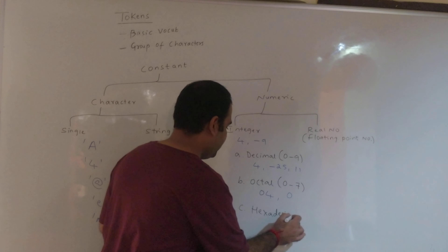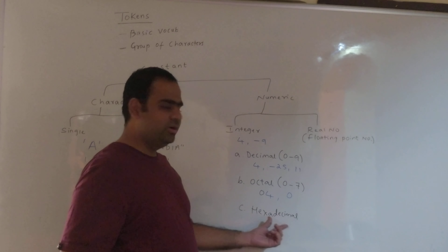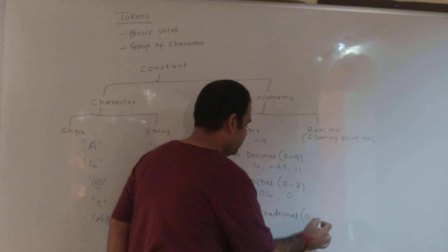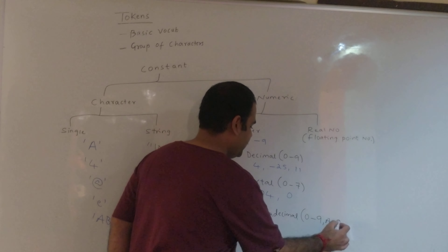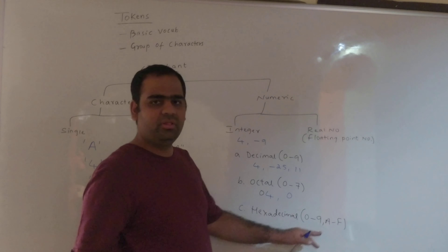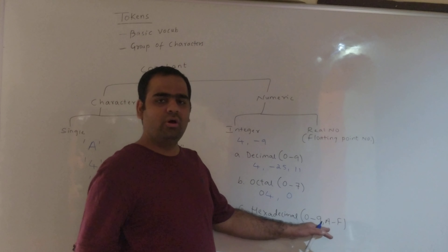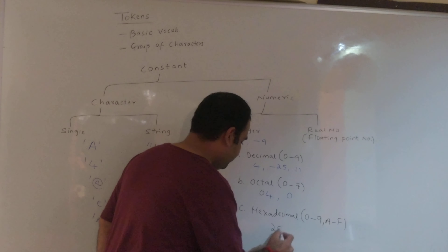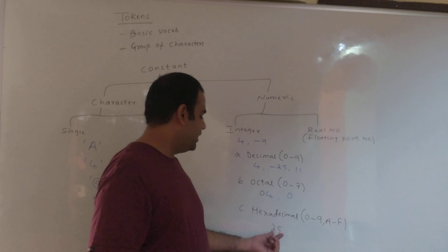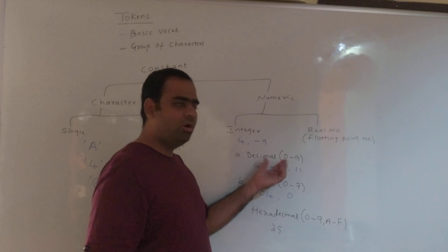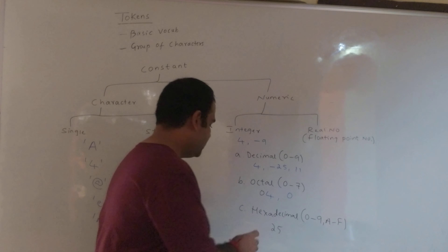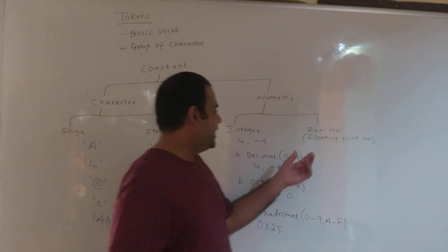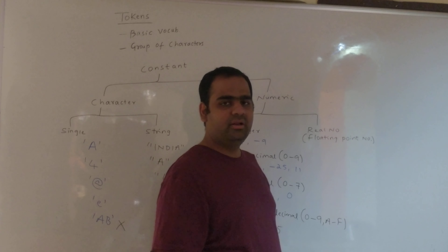The third type of integer is hexadecimal. Hexa means 6 and decimal is 10, therefore it is base 16. We use digits from 0 to 9 and A to F, where A means 10, B is 11, and so on up to F which is 15. For example, if we write 25, the question is: is it hexadecimal or decimal? To distinguish, hexadecimal numbers are prefixed with 0x.